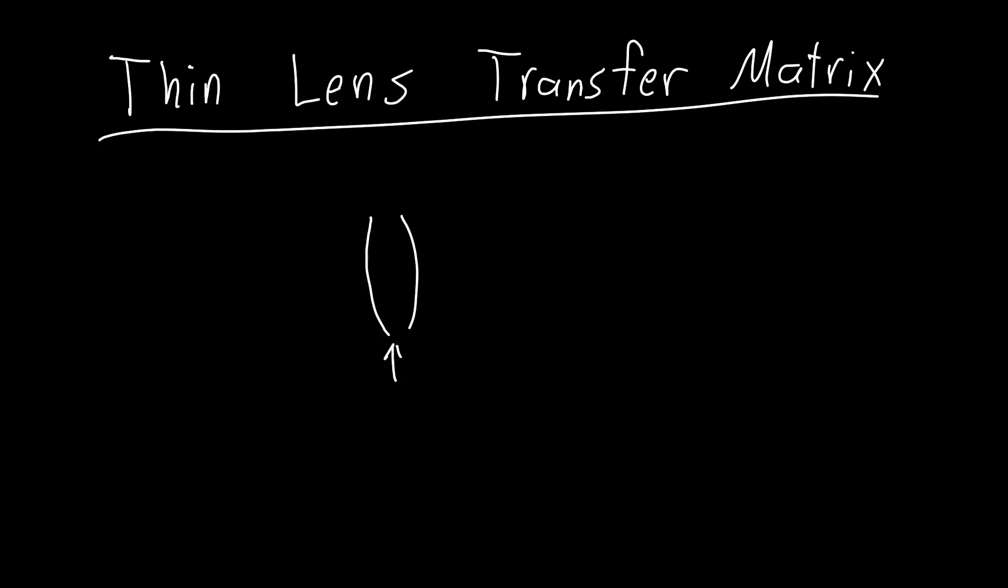In this video we're going to talk about one of the most important transfer matrices there is: the thin lens transfer matrix or ABCD matrix. This is so important because we like to use lenses in optics—they're the most important component—and we want to know how they behave.